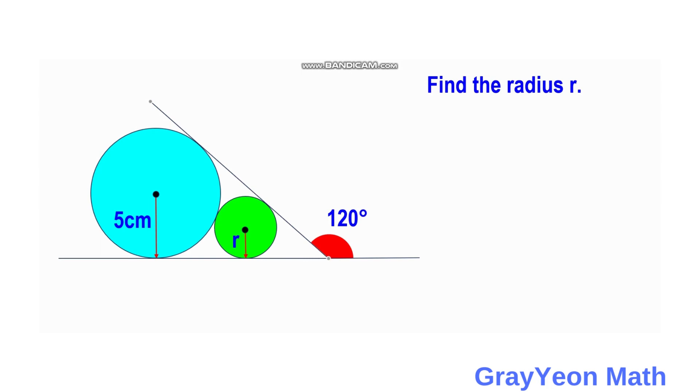First, we need to draw a line from the center of this blue circle to the intersection of the tangent lines for the green and the blue circle.